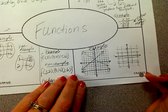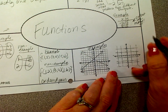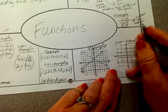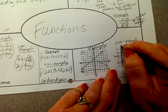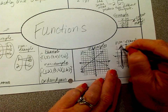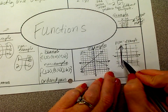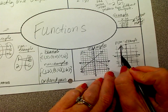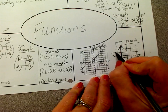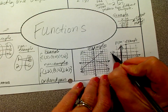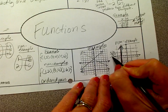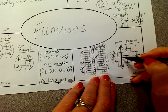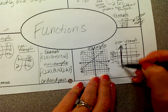Here's a non-example on a graph. A vertical line cannot be a function, because it's made by repeating the x value over and over again. This is maybe like negative 3 going to 0, negative 3 going to 1, negative 3 going to 2, negative 3, negative 3 — this x is repeating over and over.